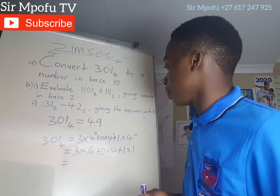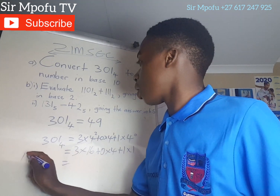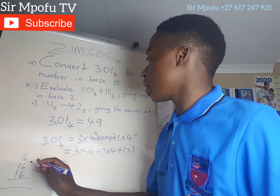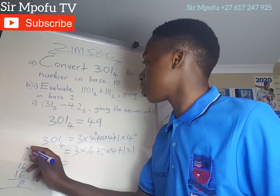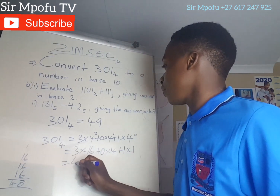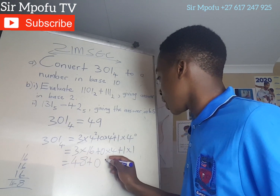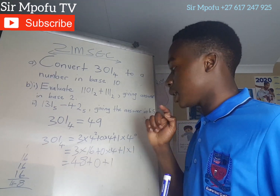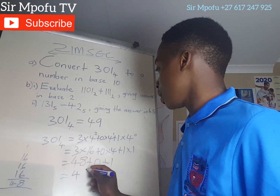16 times 3 is 48. Checking: 16, 16, 16 — 6, 12, 18, so that's 48. Then 0 times 4 is 0, and 1 times 1 is 1. So 48 plus 0 plus 1 equals 49.